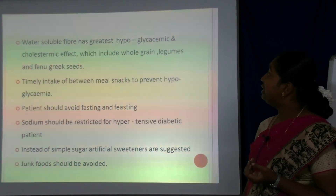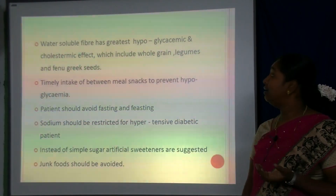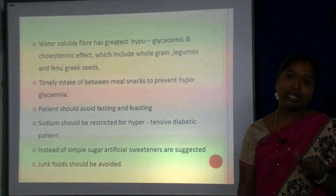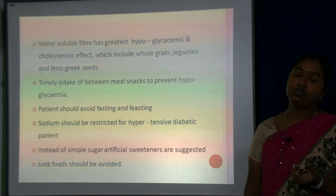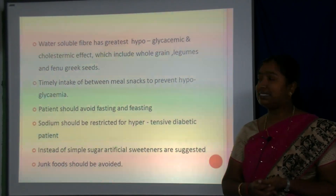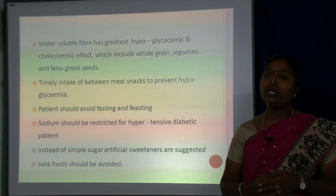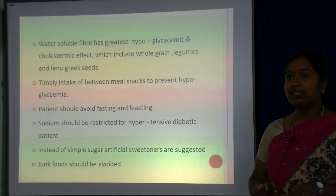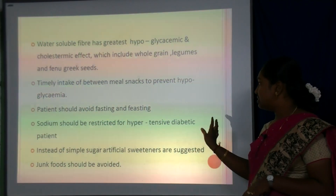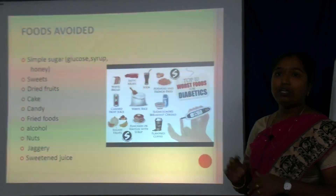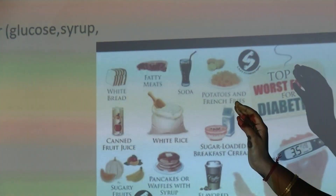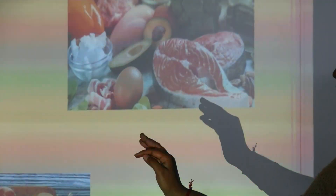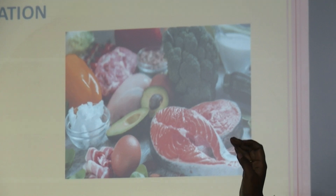High protein diet is essential to support insulin utilization. Complex carbohydrate fiber — 20–40 grams per 1000 kilocalories — should be included. Water-soluble fiber has the greatest hypoglycemic and cholesterolemic effect, including whole grains and vegetables. Timely food intake between meals is necessary to prevent hypoglycemia, and patients should avoid fasting and feasting. A sodium-restricted diet is recommended for hypertensive diabetic patients. Foods to be avoided include simple sugar, sweets, dried fruits, cake, candy, alcohol, nuts, jaggery and red meat.